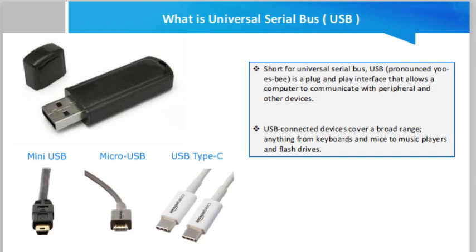Now we talk about the types of USB. Mini USB, also known as mini B, is used with digital cameras and computer peripheral devices. Mini USB has largely been replaced by micro USB and USB-C cables on newer devices.